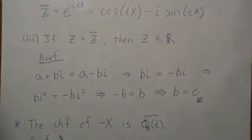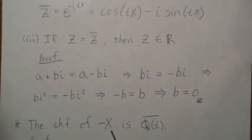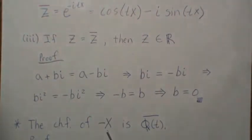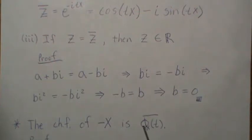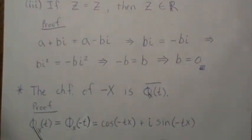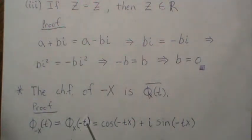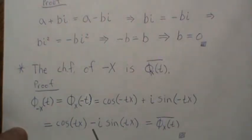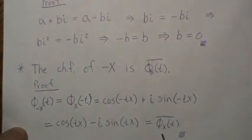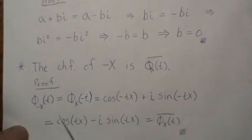One of the properties we discussed in part one was if you have a characteristic function of x and take it at negative t, it's straightforward. Here, if we have the characteristic function for the random variable -x, it is the complex conjugate of the characteristic function for x. The proof: φ(-x)(t) = φ(x)(-t), which by definition expands using cosine and sine. Since cosine is an even function and sine is an odd function, the minus sign on cosine goes away and comes out front for sine. That is exactly the complex conjugate of φ(x), and that's what we wanted to show.